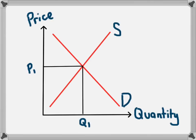The interaction of supply and demand gives us an equilibrium price of P1 and an equilibrium quantity of Q1.